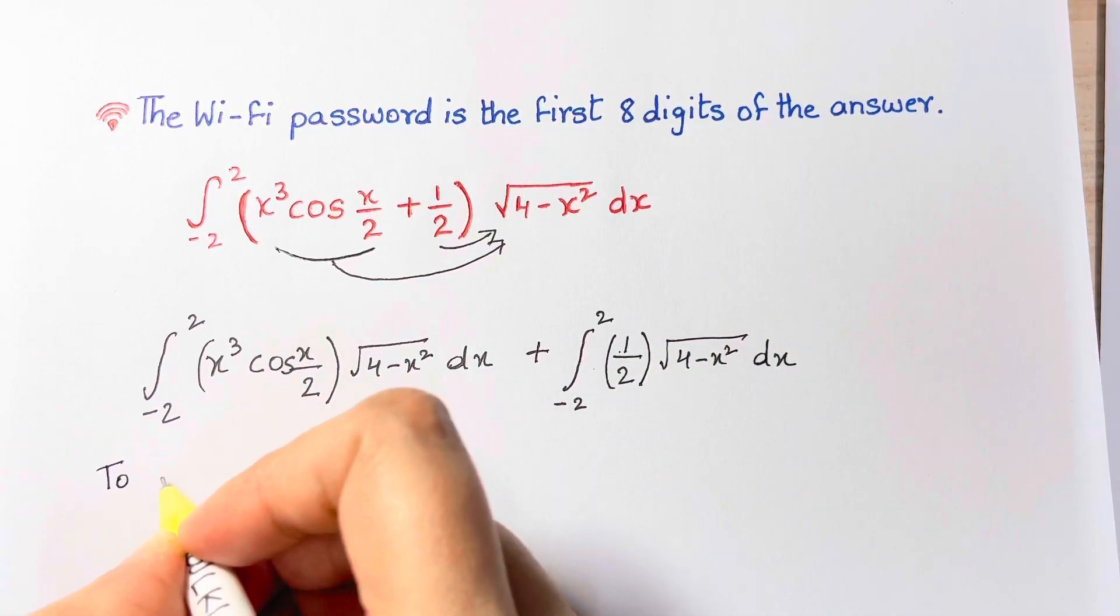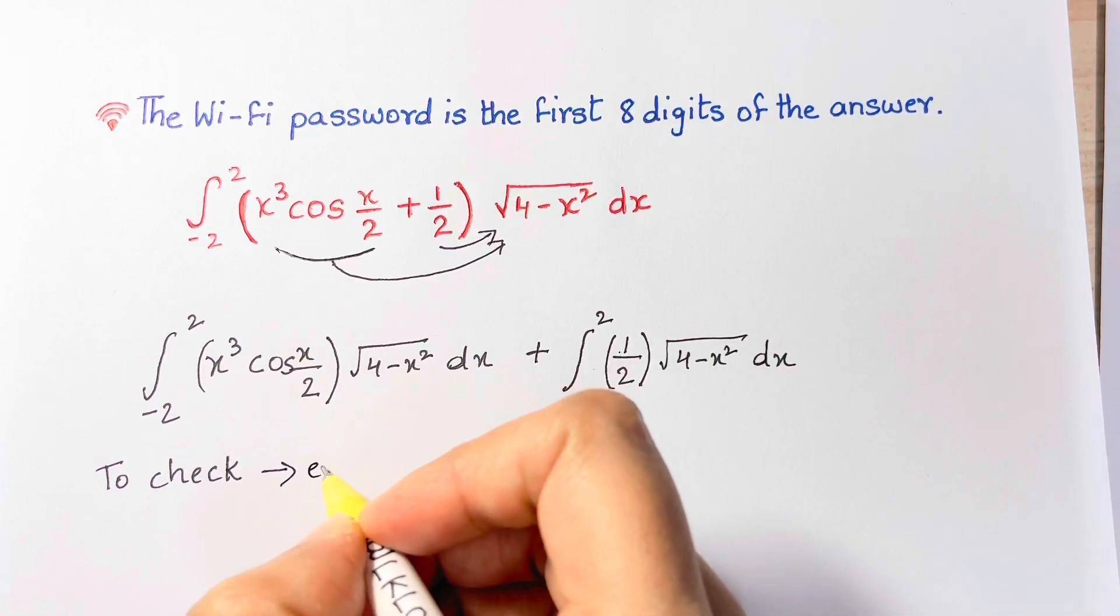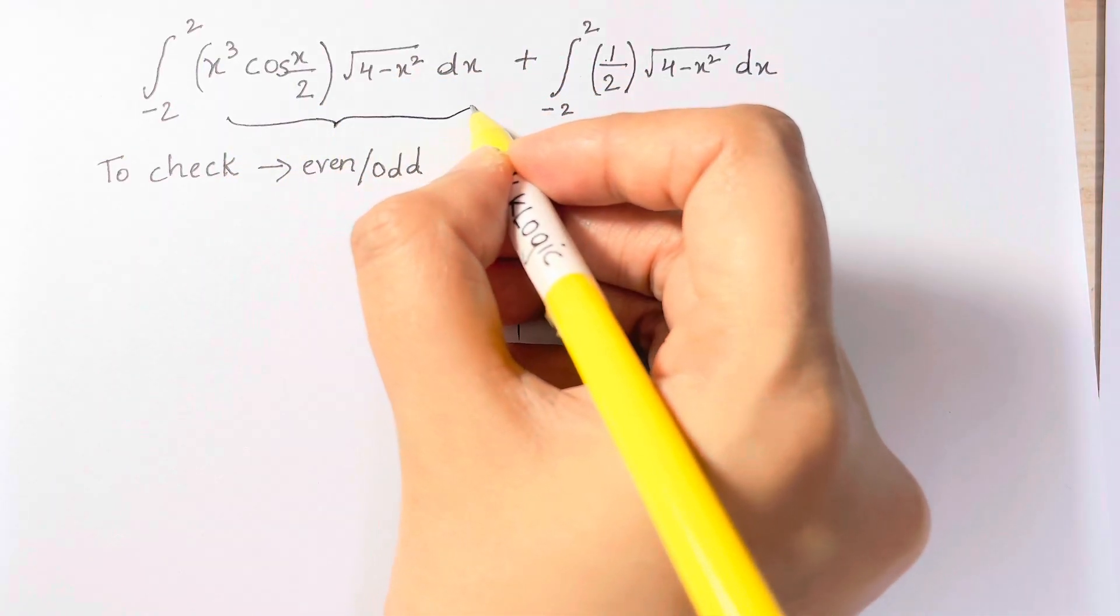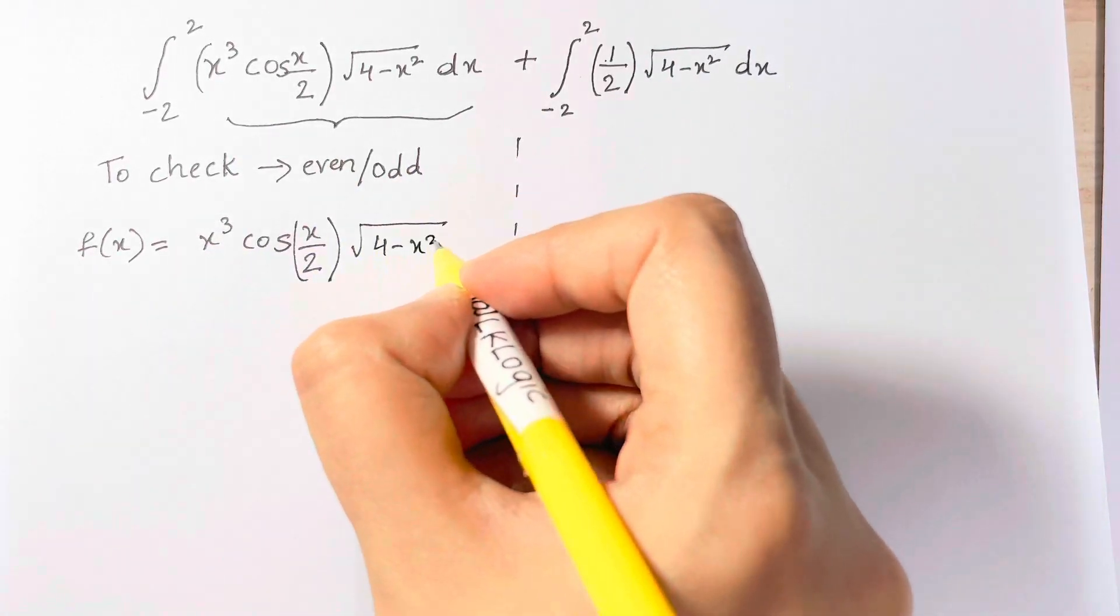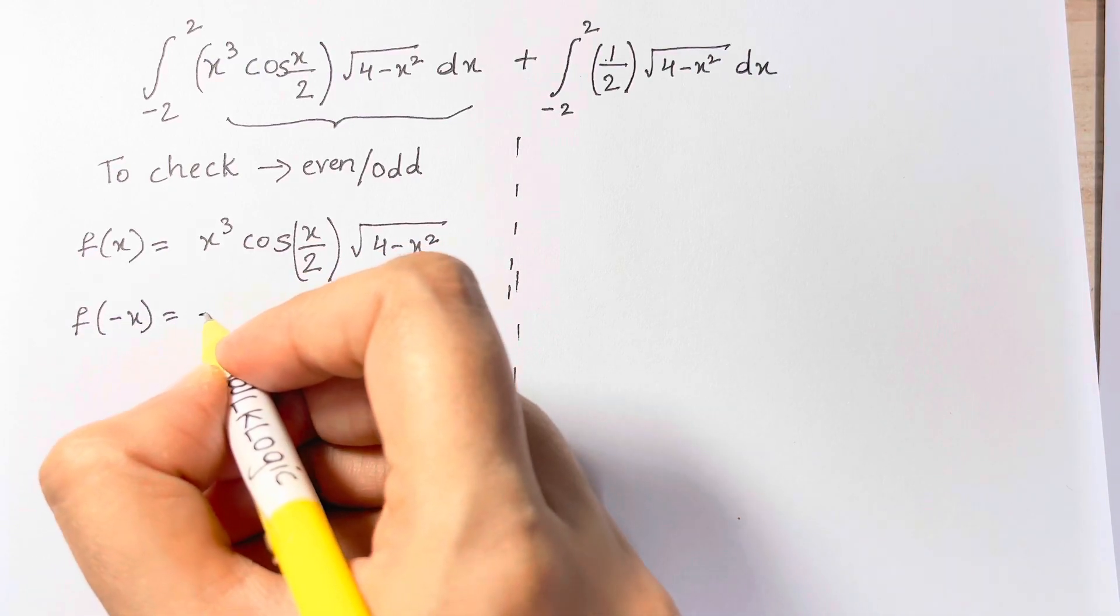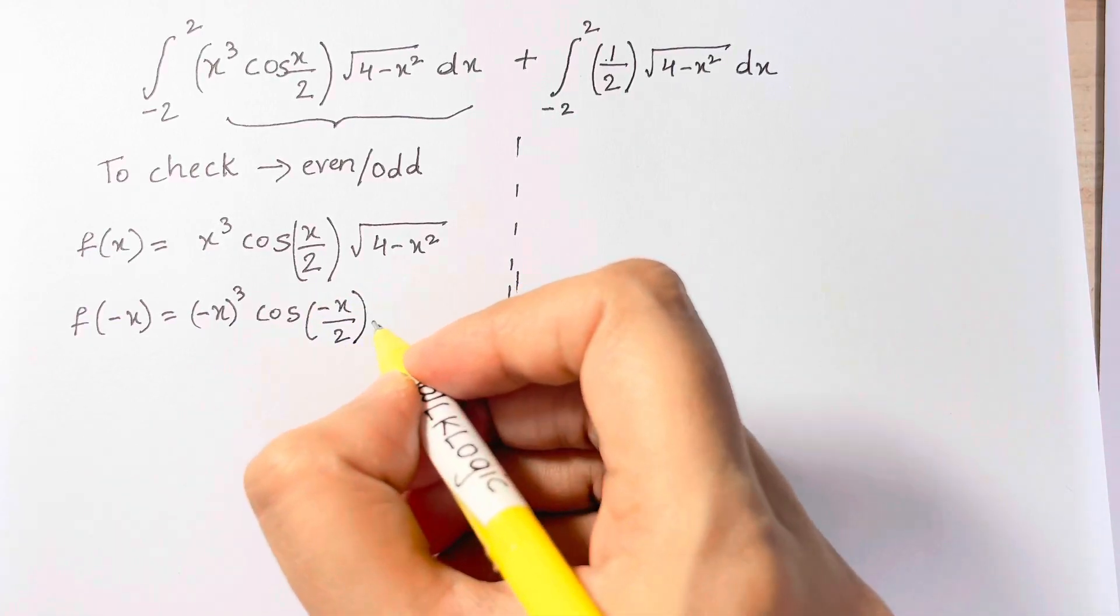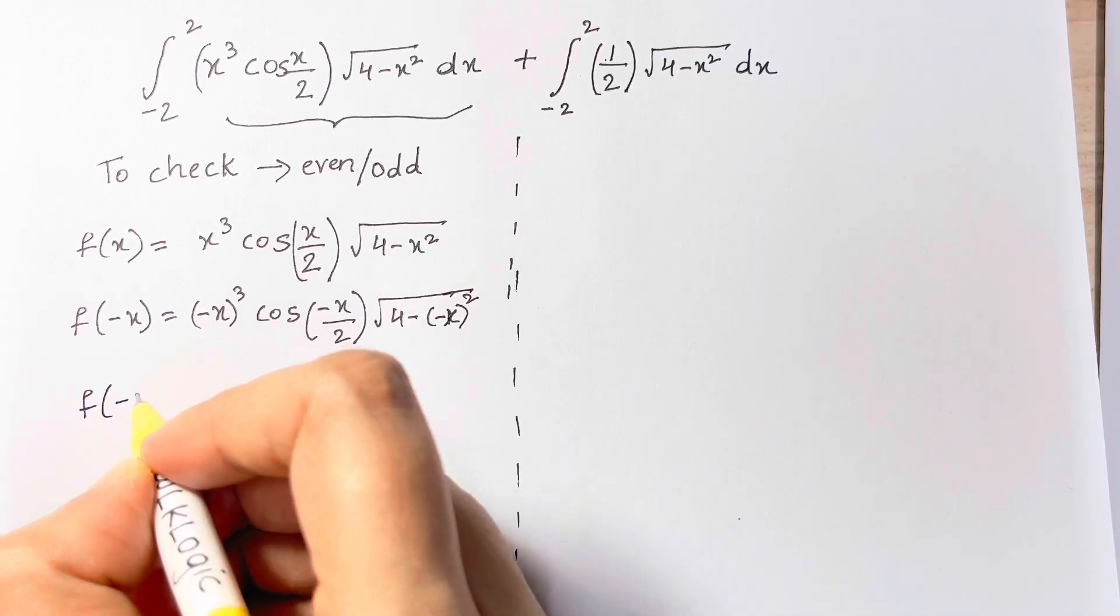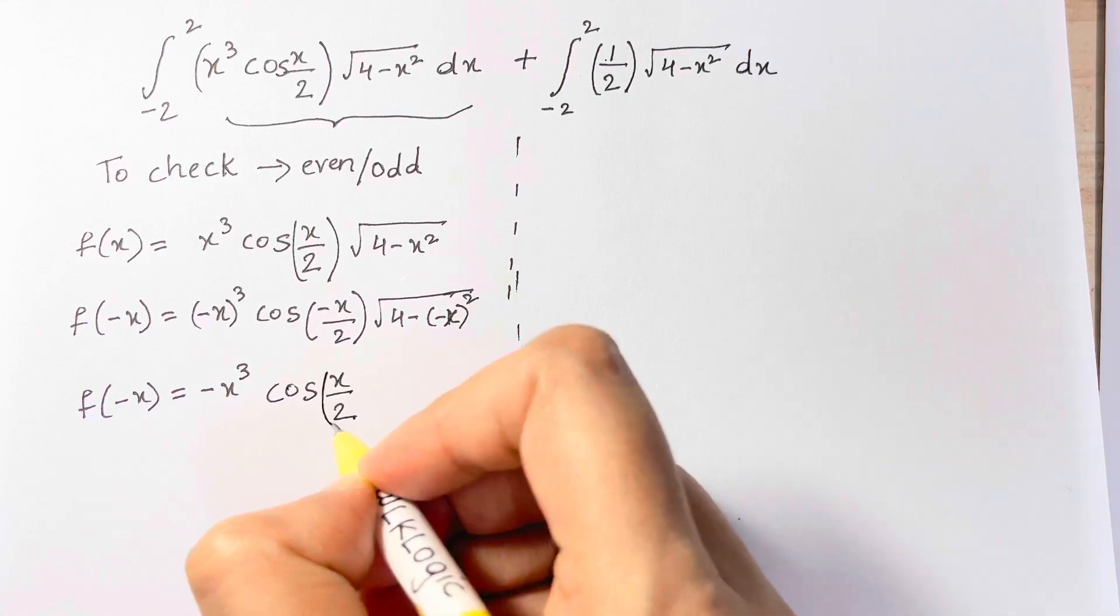Now let's consider the integral on the left. We can evaluate it by considering even and odd functions. So let's check if it is even or odd. This is the function f(x). Then we plug in -x in place of x. We get (-x)³ cos(-x/2) √(4 - (-x)²). Then f(-x) equals -x³ cos(x/2) √(4 - x²).